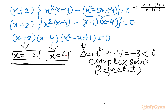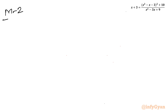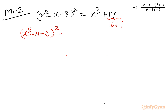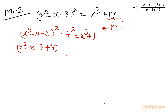Now method number 2. I will begin from the same equation (x² - x - 3)² = x³ + 17, but this time split 17 as 16 + 1 — the easiest way. So (x² - x - 3)² - 4² = x³ + 1, moving 16 to the LHS. Again a difference of two squares on the left.